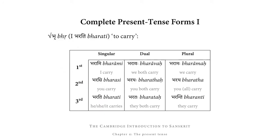So let's combine the new elements we've just encountered. In order to have complete present tense forms, we need the present tense stem, to which we then add the relevant endings. For example, looking at the third person forms of a class 1 verb with stem bhara: we add our third person endings ti, taḥ, nti to get bharati, bharataḥ, bharanti.